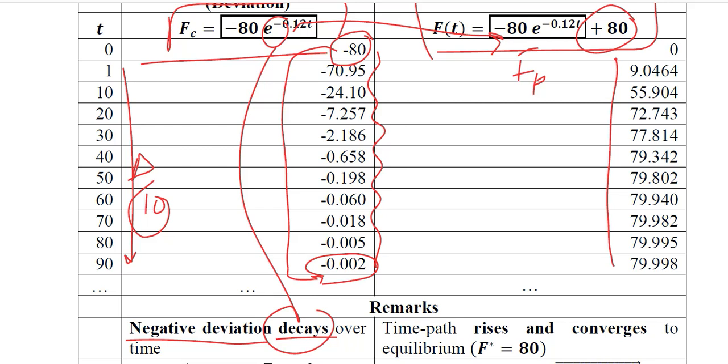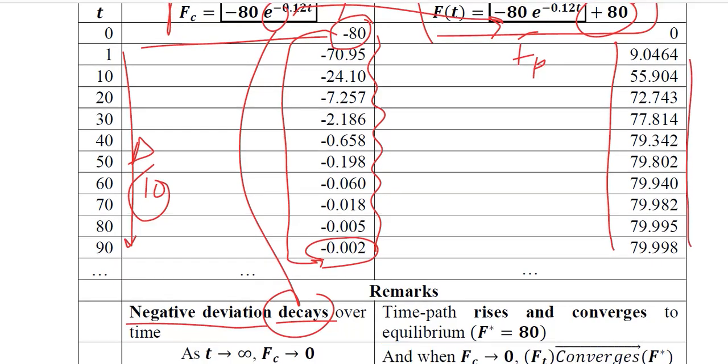After adding this, we got these values. It was 0 and then it kept on increasing. So we can say that as it is increasing, it will rise in a graph and it will converge because of the negative deviation on the decay.